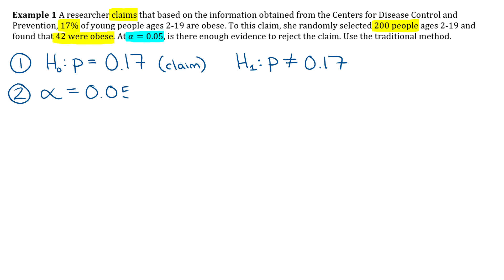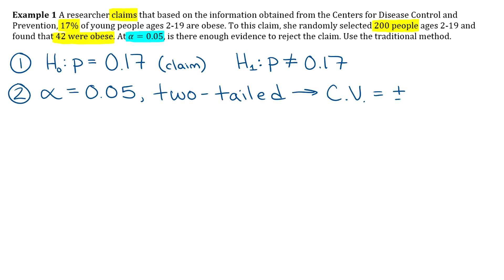Step two: we're going to get our critical value. Alpha is 0.05 and this is a two-tailed test, so from the standard list, your critical values are going to be plus or minus 1.96.